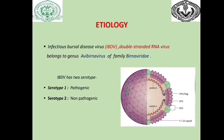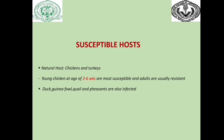Serotype 2 infects chickens or turkeys, but does not cause clinical signs or immunosuppression. The natural hosts are chickens and turkeys. Young chickens 3 to 6 weeks of age are mostly susceptible due to their mature B lymphocytes and active bursal Fabricius, and also because their maternal antibody has waned. Adult birds are resistant due to their regressed bursa. Duck, guinea fowl, quail, and pheasants are also infected.